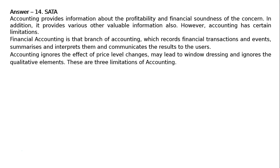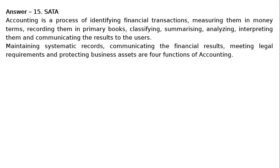Question 15: What is accounting? Explain four of its functions. Answer 15: Accounting is the process of identifying financial transactions, measuring them in money terms, recording them in primary books, classifying, summarizing, analyzing, interpreting them and communicating the results to the users. Four functions of accounting: maintaining systematic records, communicating the financial results, meeting legal requirements and protecting business assets.